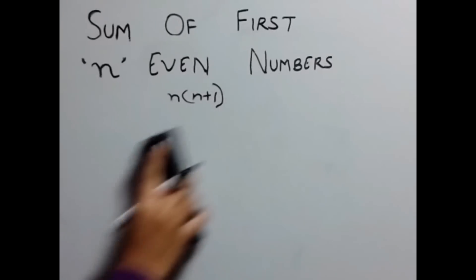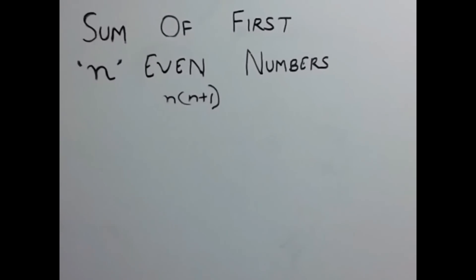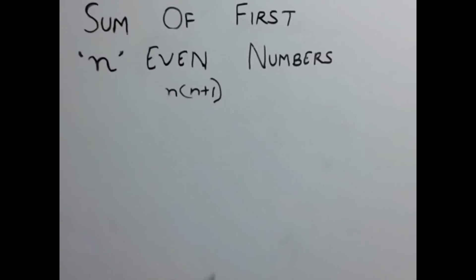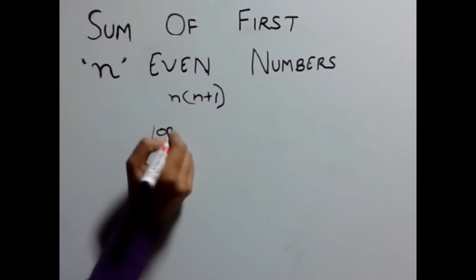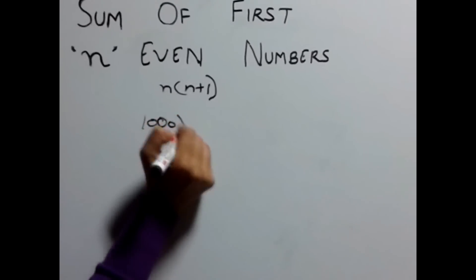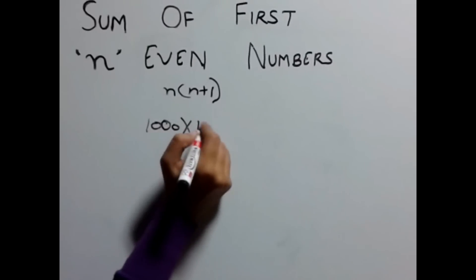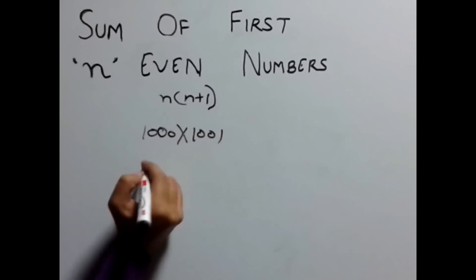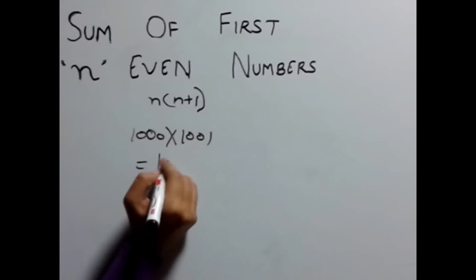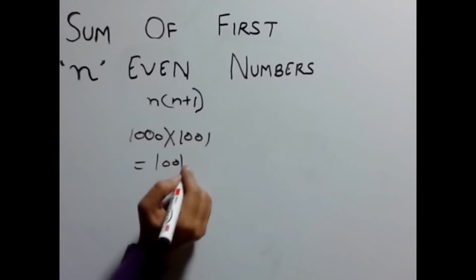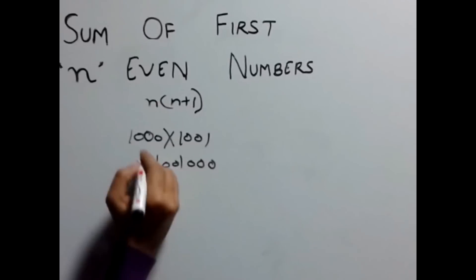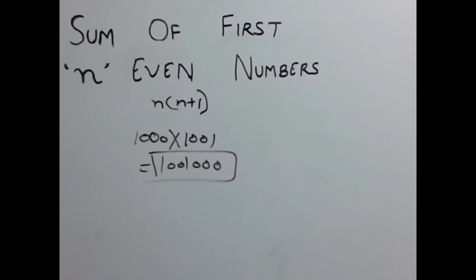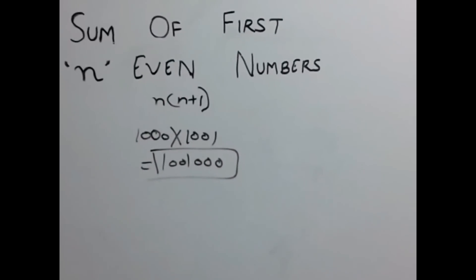Let's add the first thousand even numbers. n is 1000, simply multiply: 1000 into 1001, which gives you 1,001,000. That's the answer. Easy.